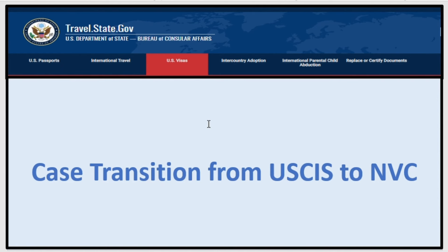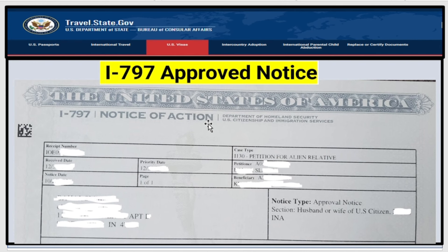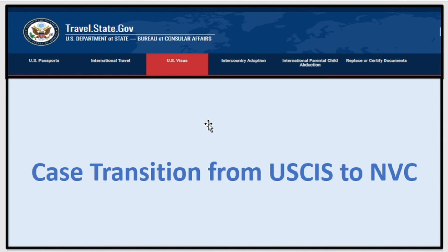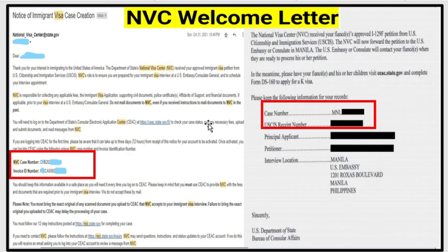Before that, let's talk about the case transition from USCIS to NVC. Once USCIS approves your petition, they will send you an I-797 approved notice telling you that your petition was approved. This notice has important information about the petitioner and the applicant. At the same time, USCIS will send your approved petition to NVC for processing. NVC will receive your case, enter the data into the system, create your credentials, and send you login credentials in a welcome letter.